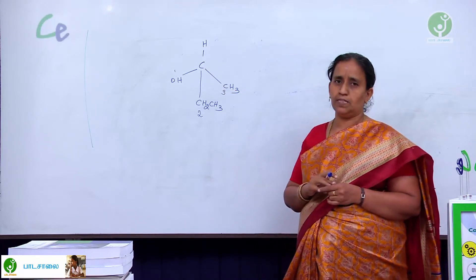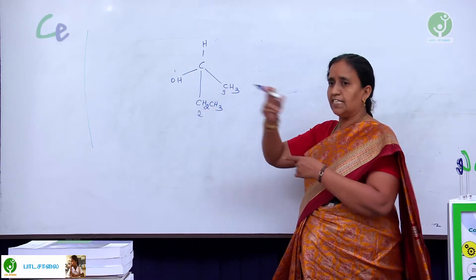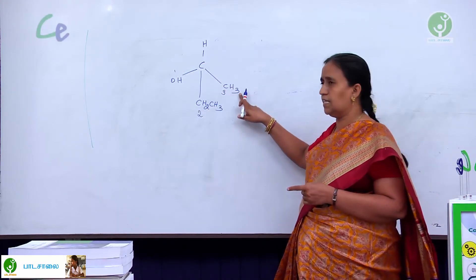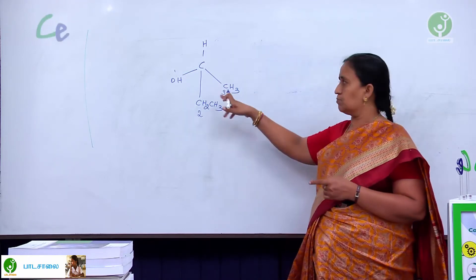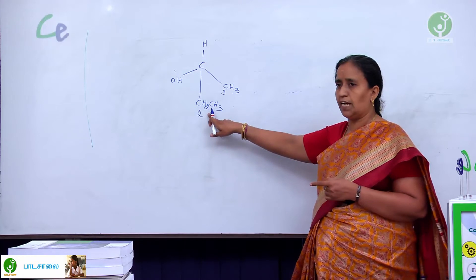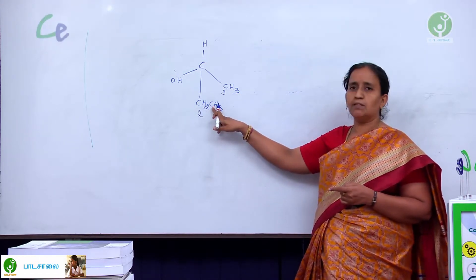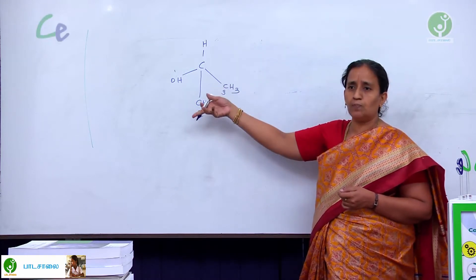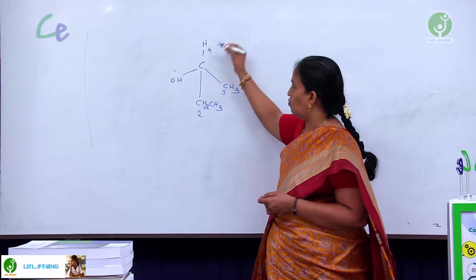Then the third priority comes to methyl. Though they are having same atomic number you check the next atom, second atom. Second atom here is hydrogen. Here the second atom is hydrogen. Then go to the third atom. Third atom is hydrogen. Come to the fourth atom. Fourth atom is here hydrogen whereas here the next atom is carbon. So, carbon is having more priority. That is why we are giving priority 2 here, 3. Then fourth one.